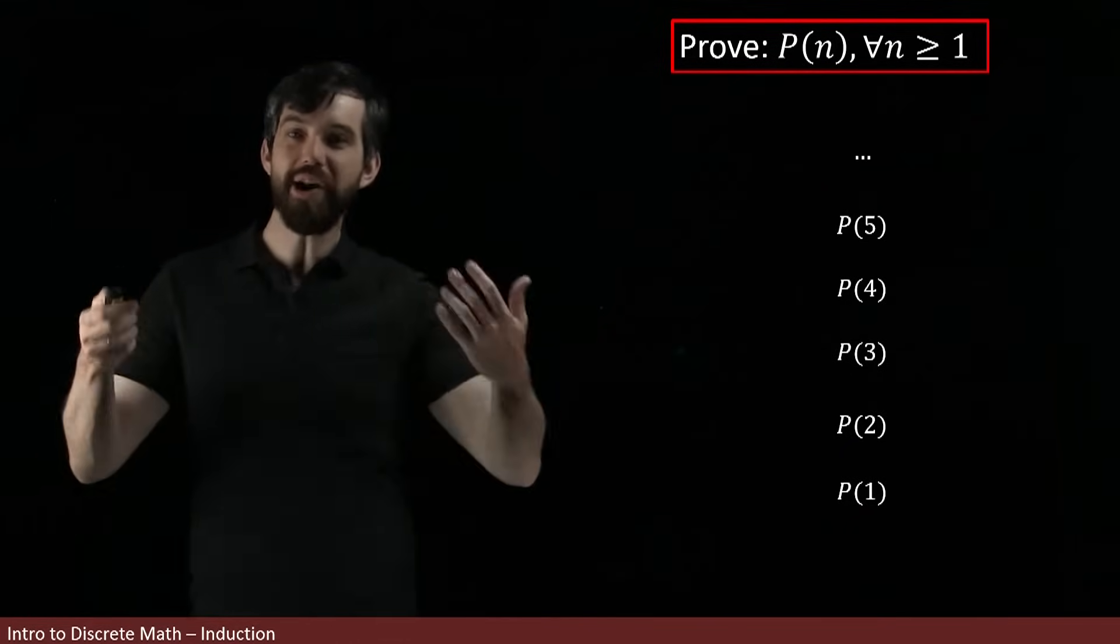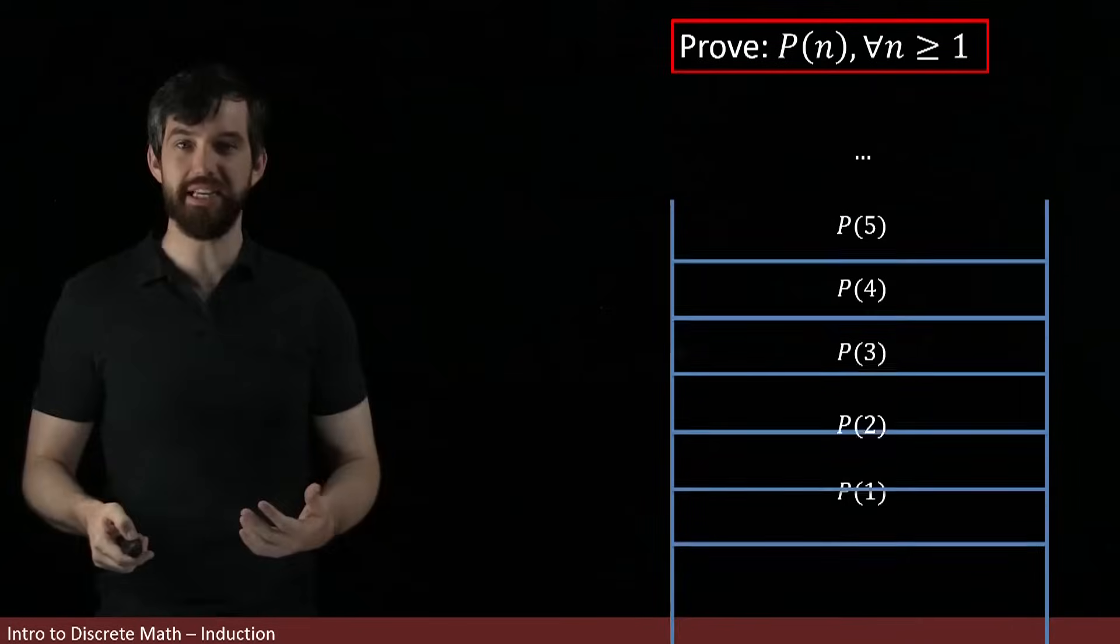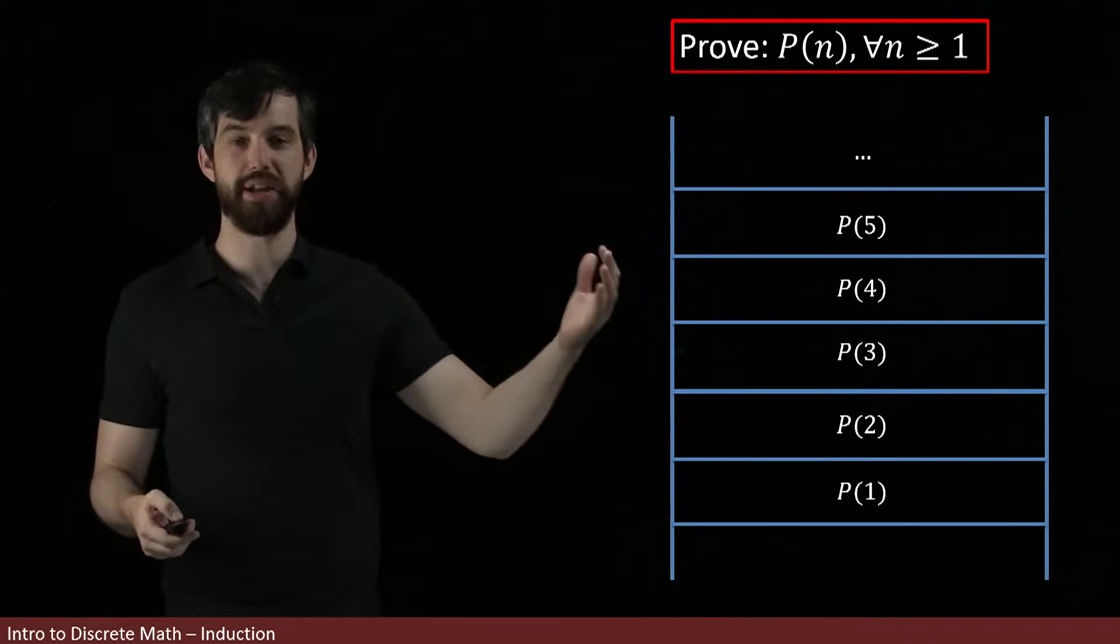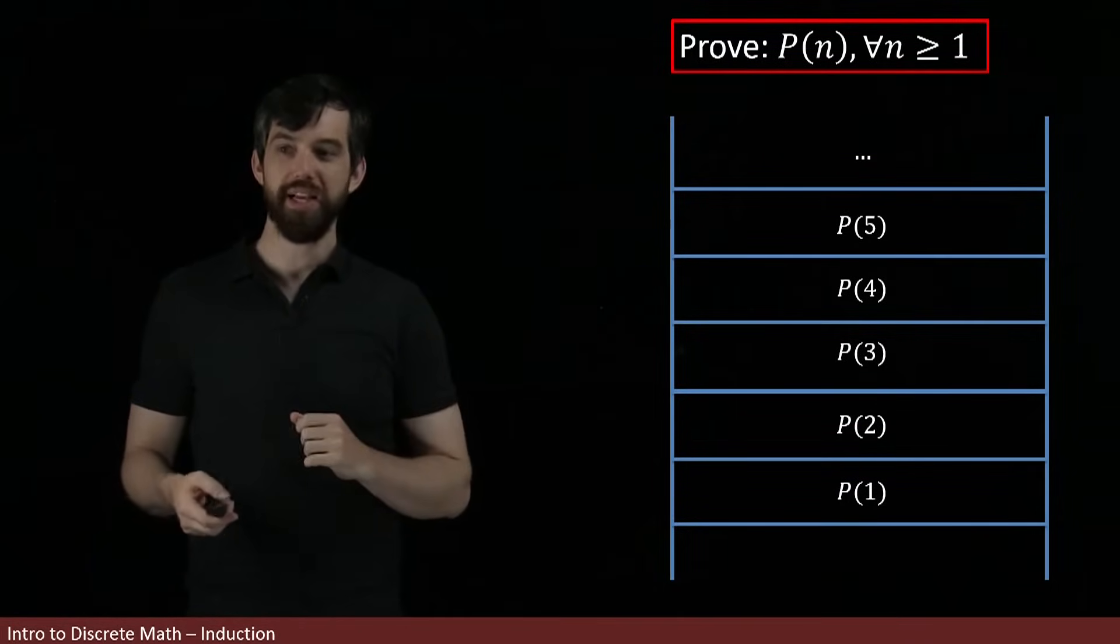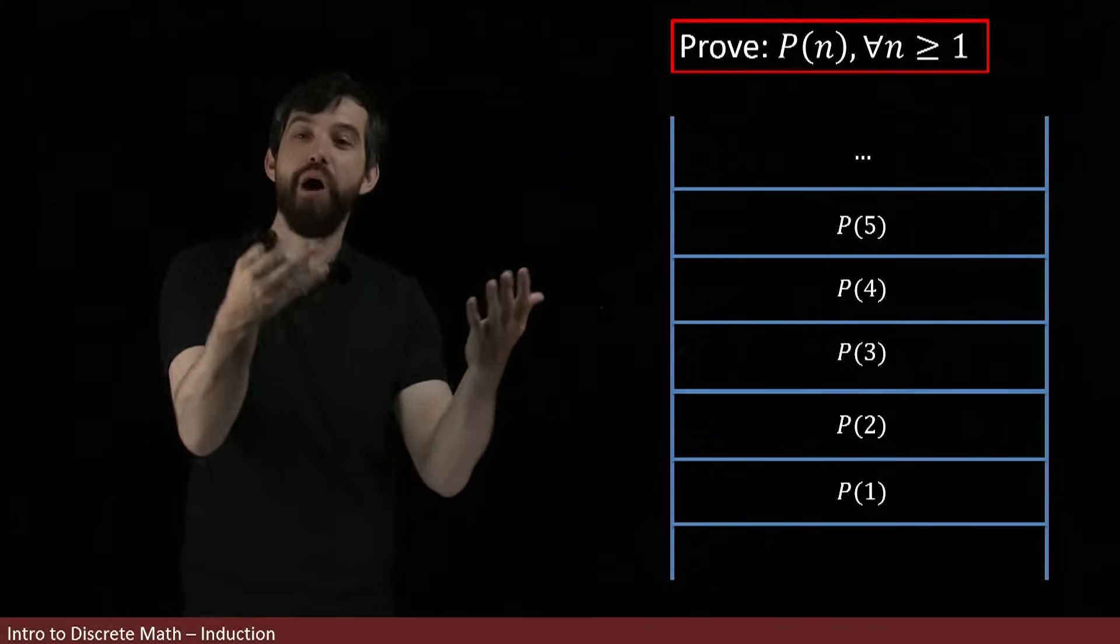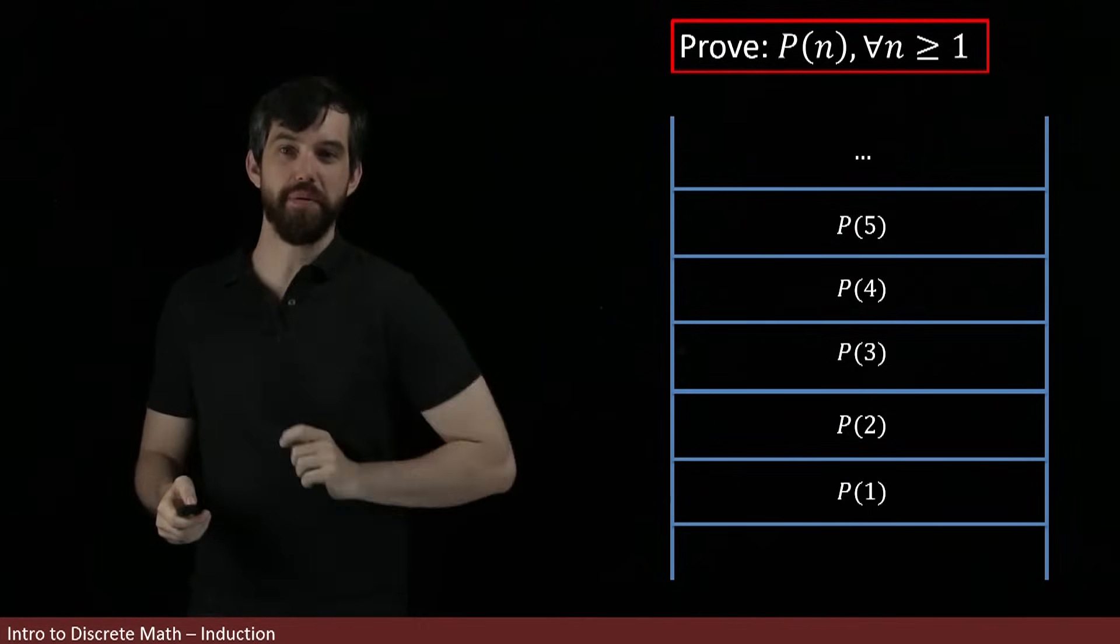Then what you get is this infinite family of different claims. You get a P(1) claim, that might be some equality or some claim that needs to be true. You get a P(2), a P(3), a P(4), a P(5), and so on. So in other words, the general structure of these claims is, again, going to be a ladder: a first step, a third step, and so on.